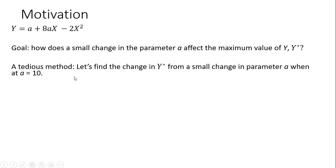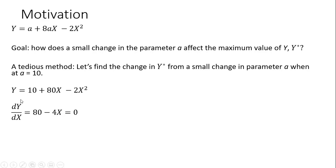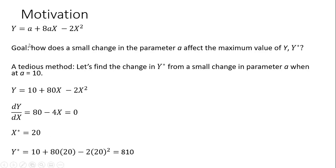We're going to first go through a tedious method. Let's find the change in y star from a small change in parameter a when a equals 10. So when a is 10, we make our substitution into our objective function. We take the derivative of that result and set it equal to zero, trying to find the maximum value. Solving for x, the optimal value x star is going to be 20. Evaluating our objective function at 20, we get 810. So when a equals 10, the optimal value of x is 20 and y star, the maximum value of y, is 810.